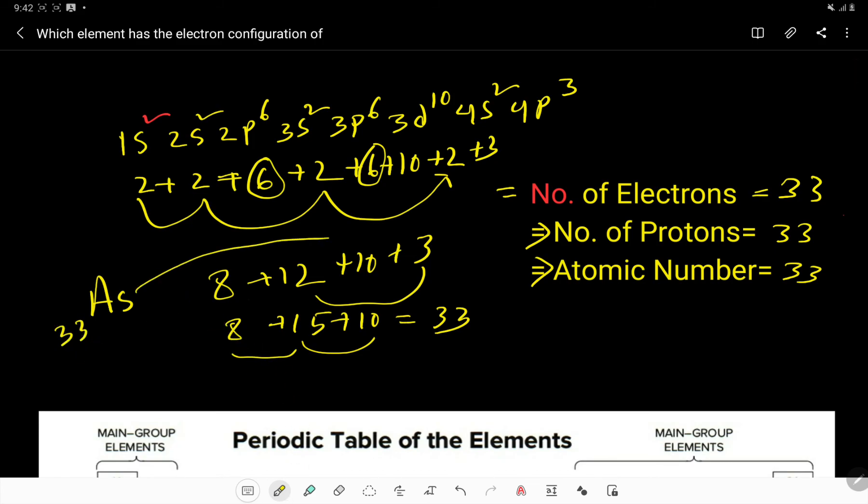Its atomic number is 33. Look, its number of electrons is 33, number of protons is 33, and its electronic configuration is this. So thank you for watching this video. Be well.